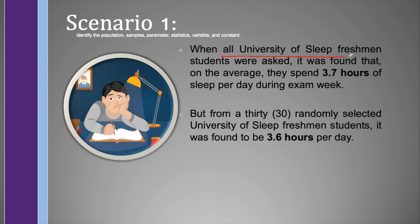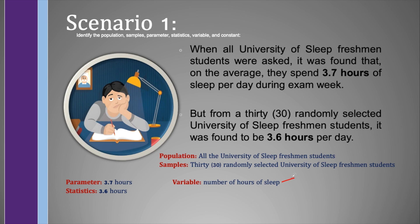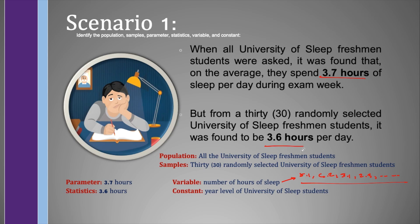It is clear that all the University of Sleep freshmen students is the population, and the 30 randomly selected University of Sleep freshmen students are the samples. Since the population is all the University of Sleep freshmen students, the parameter is 3.7 hours, while the statistics is 3.6 hours. The variable is the number of hours of sleep, with responses such as 5.1, 6.2, 3.1, 2.3, and so on. The average from the population is 3.7 and from samples is 3.6 hours. We may consider the year level, which is freshmen or first year level, as the constant.